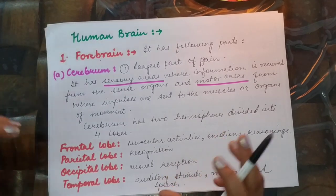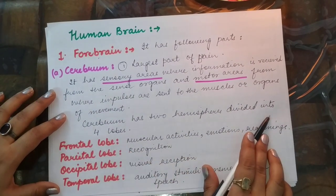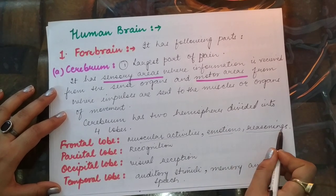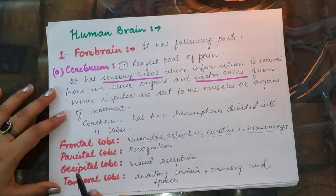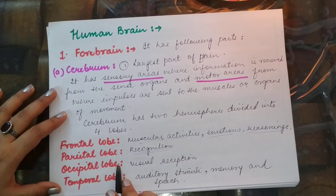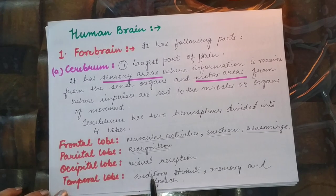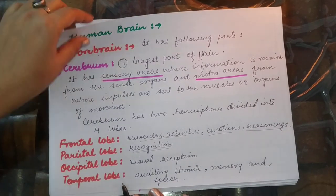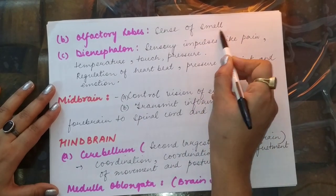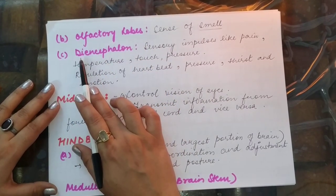The cerebrum has two hemispheres and four lobes. The frontal lobe controls muscular activities, emotions, and reasoning. The parietal lobe is responsible for recognition of things, places, and persons. The occipital lobe handles visual reception. The temporal lobe controls auditory stimuli, memory, and speech. The second part of the forebrain is the olfactory lobes, which help in the sense of smell. The third is the diencephalon.